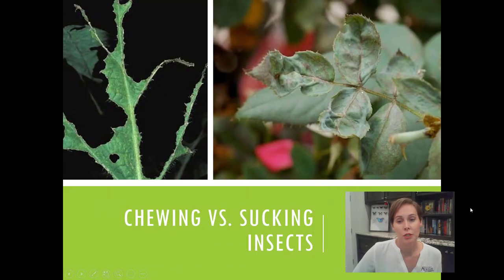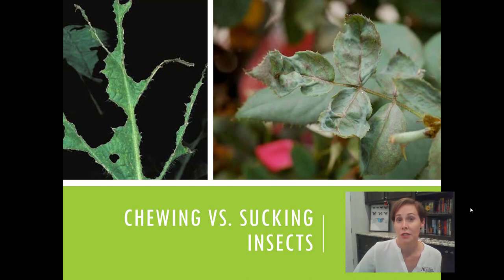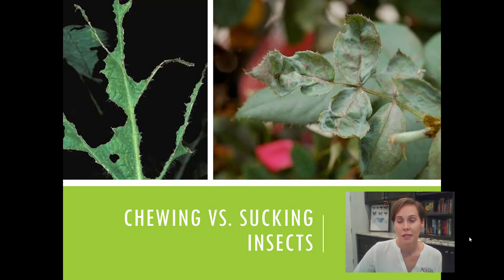It's important to understand the difference between a chewing insect and a sucking insect — they have different types of mouth parts. Chewing insects are going to cause different types of damage than those that might be sucking on the sap and juices of plants. By and large, chewing insects are taking chunks of tissue out of the plant, whereas sucking insects are causing some deformities and wilting damage that looks similar to that.